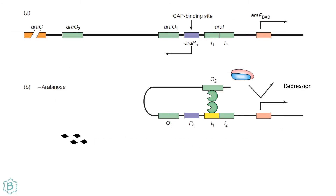When arabinose is not present, AraC monomers bind to the O2 and I1 regions of the operator, leading to looping of the DNA, which causes RNA polymerase to not bind to the promoter. In this case, repression of the arabinose operon occurs.